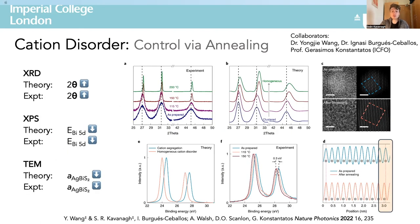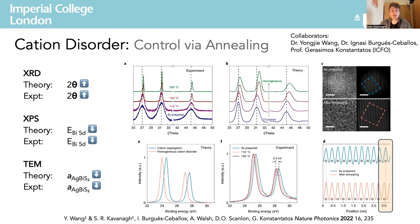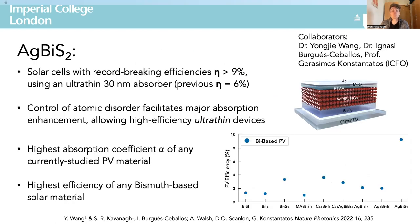To confirm that this shift from an inhomogeneous to homogeneous cation distribution was driving the absorption enhancement, we compared our calculated and experimental changes under X-ray diffraction, XPS and TEM line scans, giving us confidence in our model of the underlying atomic behaviour. These absorption enhancements allowed us to develop record-breaking solar cells yielding devices with over 9% efficiency in an ultra-thin architecture, demonstrating the exciting potential of this disorder engineering approach. Two further records were set: the highest absorption coefficient of any currently studied photovoltaic material, and the highest efficiency of any bismuth-based solar material.